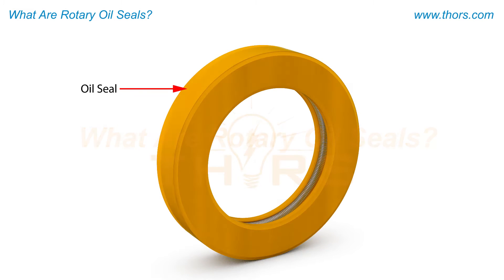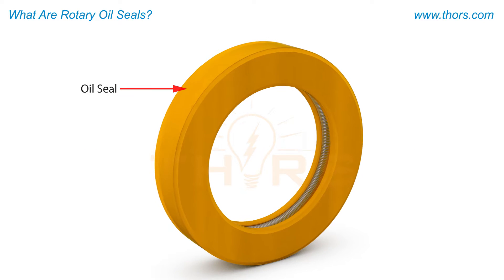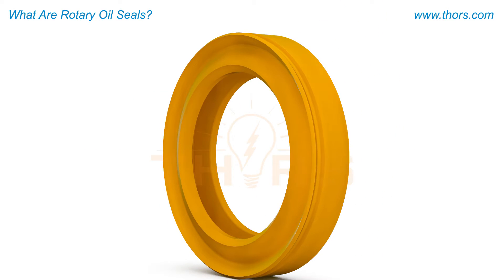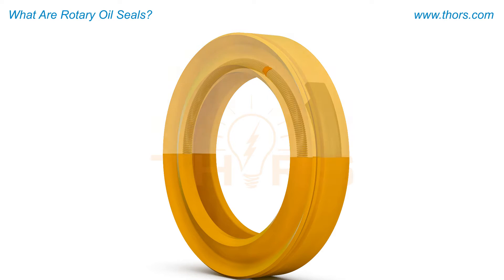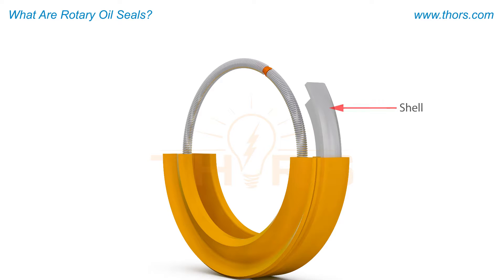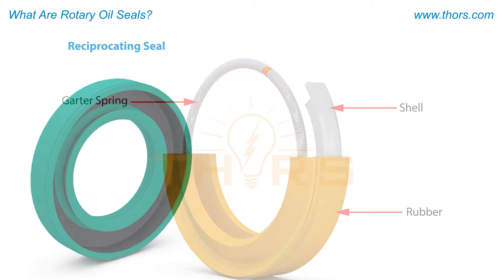Oil seals are installed in a variety of working mechanical components in many industries. Such seals are typically composed of rigid metal inserts referred to as shells, portions of flexible rubber, and in some cases garter springs.